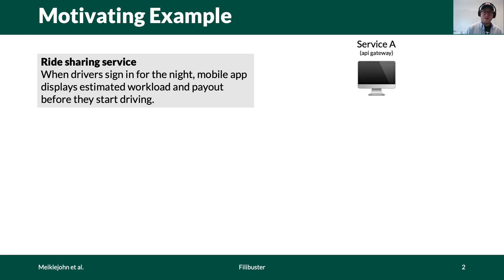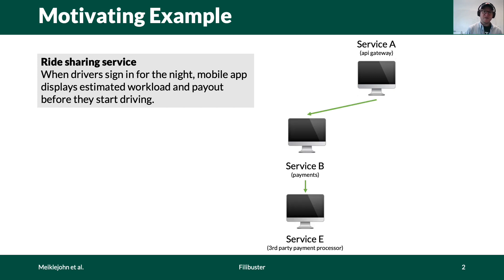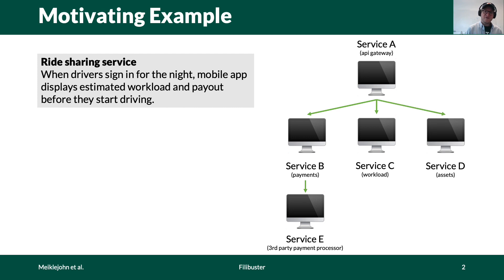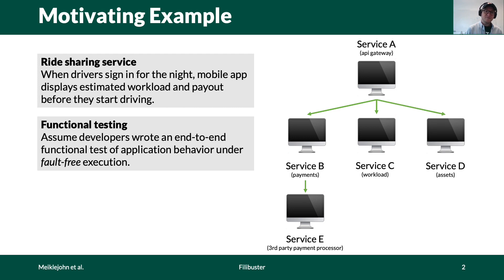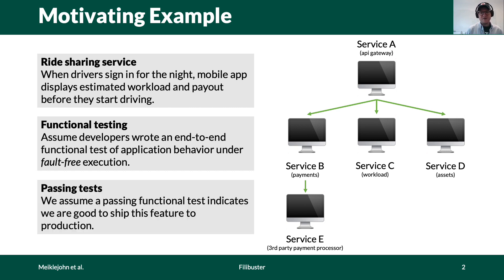We might construct this using a microservice architecture that looks like the following. An API gateway talks to a payment service, which talks to a third-party payments processor to authorize payments. It also talks to a workload service for generating the expected workload, and an asset service for downloading assets. Our developers test this application by writing an end-to-end functional test that assumes no faults will occur, and they integrate this into CI and ship it to production.